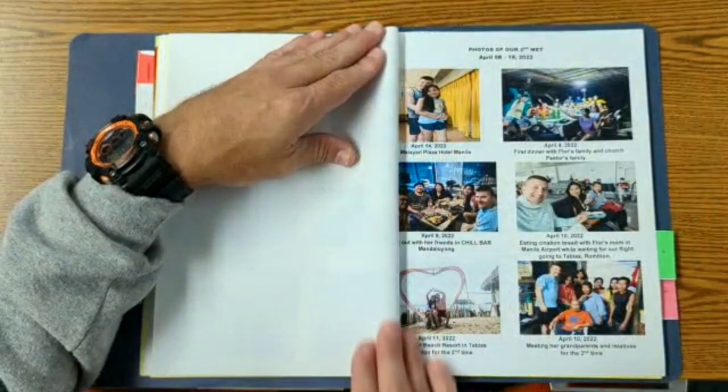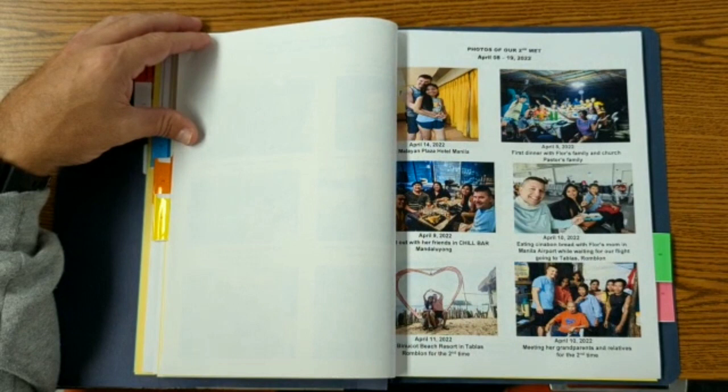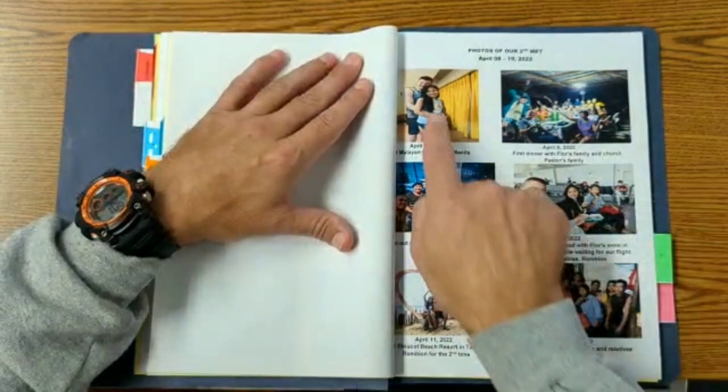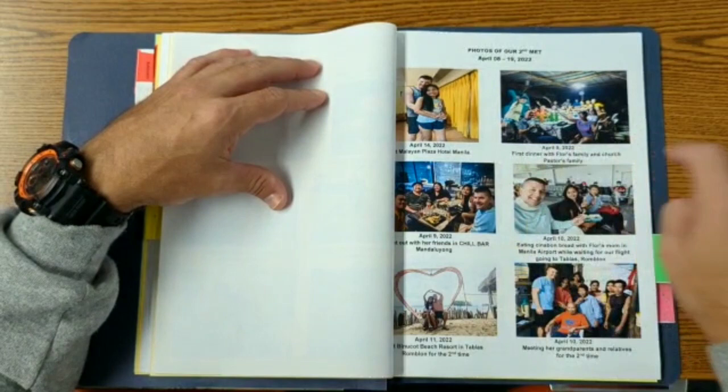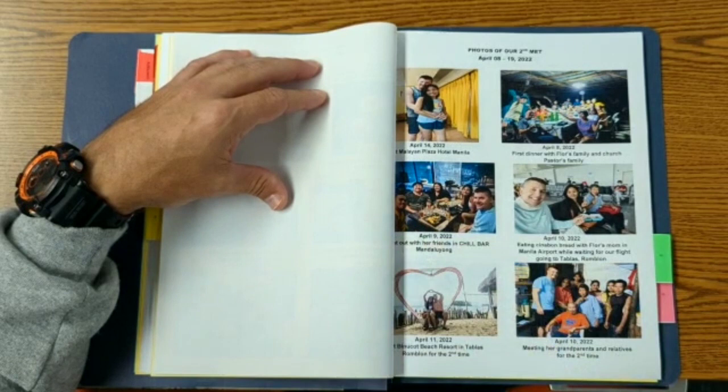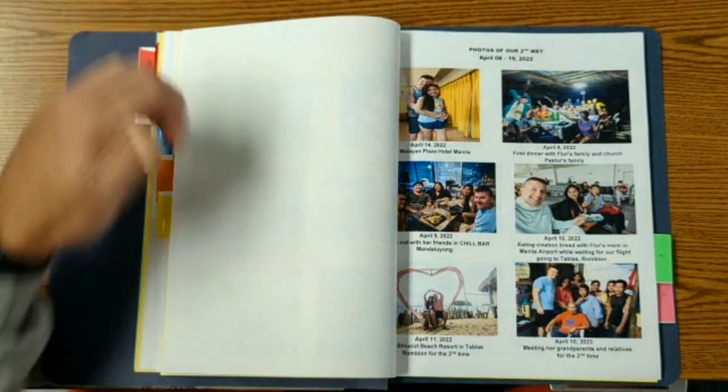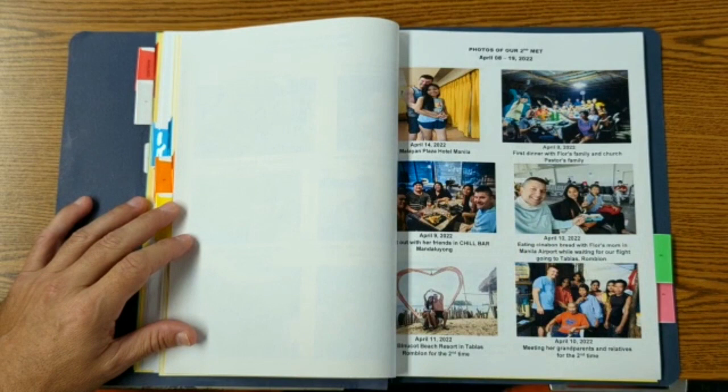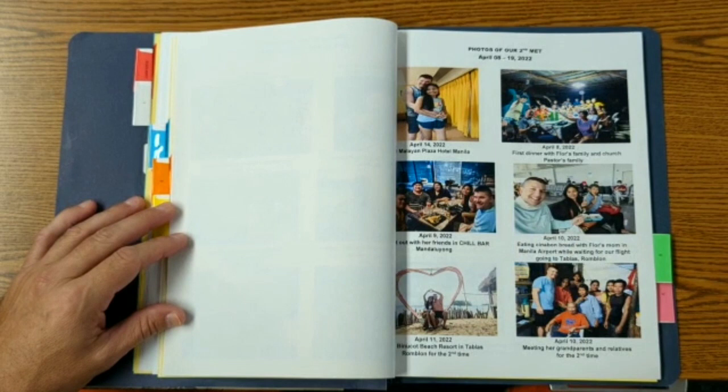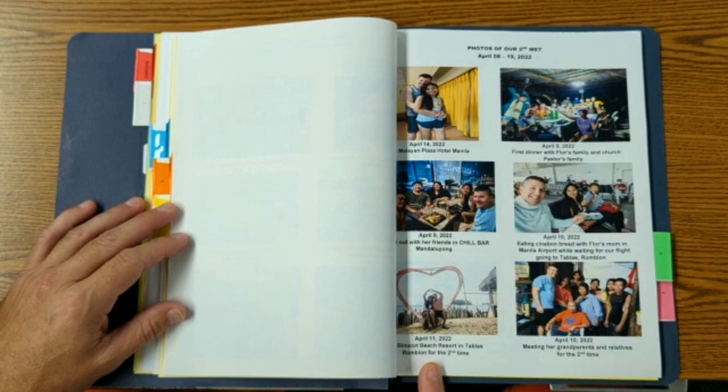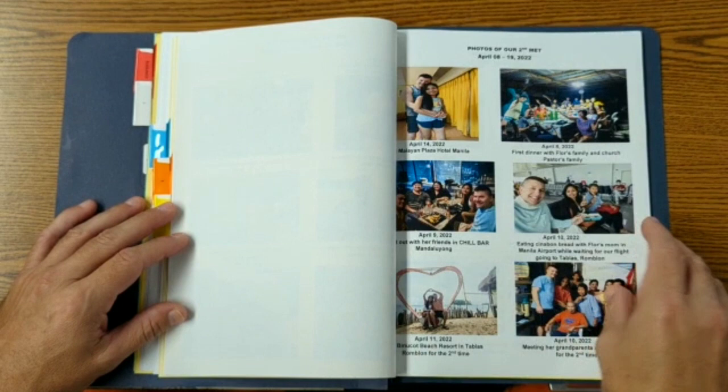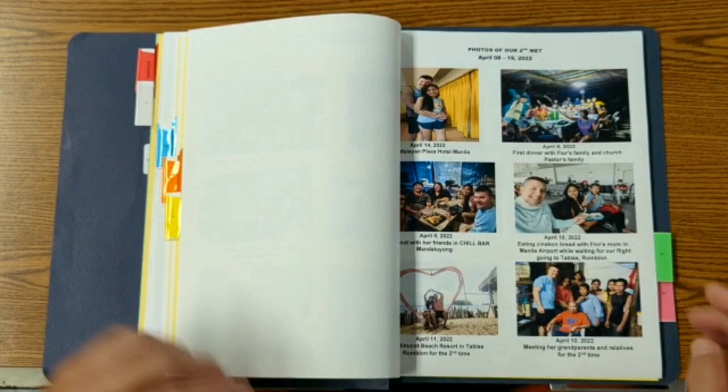Here's photos from our second time meeting, April 8th through April 19th of 2022 this year. So here's photos from the hotel that we stayed in, more of where she currently lives photos. Here's with her friends, a night out. I got to meet Dexter and his girlfriend, Samantha. And then we went on a trip. I took her mom back to Tablas for the first time in many years. That's us enjoying cinnamon bun. And then this is photos at the beach that we always like to stay at, Bianoco Beach. Also get to see her family again, her Lola and Lolo, grandfather and grandmom.